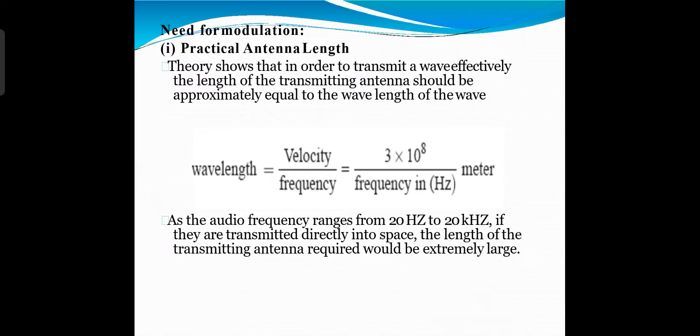The low frequency message signal has a very high value of lambda, which would require a very high antenna — that is practically not possible. Hence, we need to modulate the message signal over a high frequency carrier signal so that we can have a practical value for the height of the antenna.